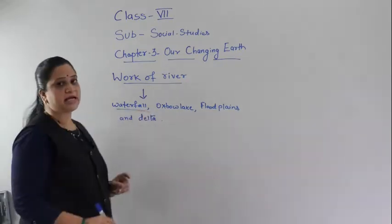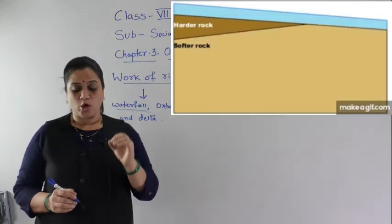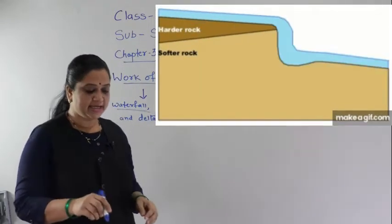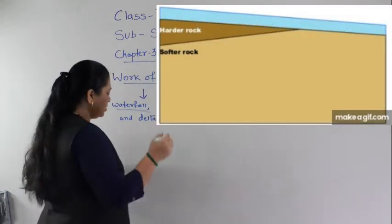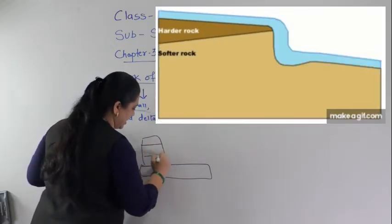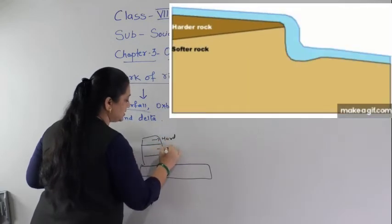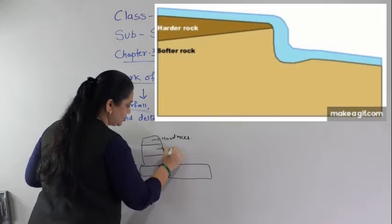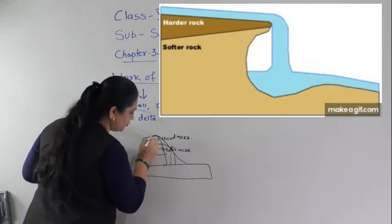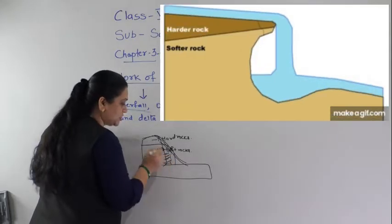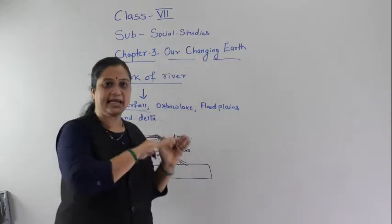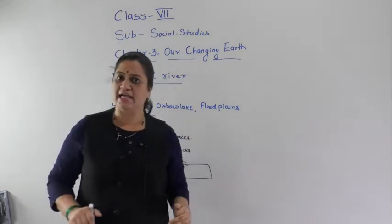How are waterfalls formed by the river? When the riverbed changes from hard rock to soft rock, the running water erodes the soft rock. Here children — this is the earth's crust and these are the rock layers: this is the hard rock and this is the soft rock. When the water flows, it erodes the soft rock and thus waterfalls are formed. The soft rock slowly gets eroded and the waterfall is formed.